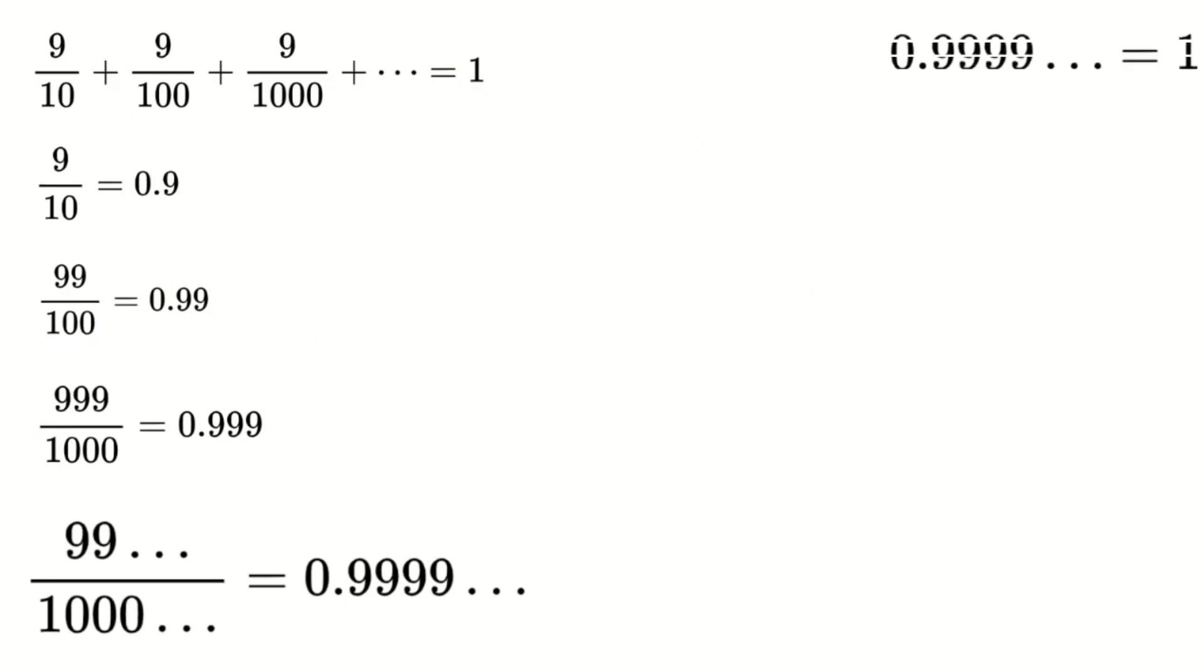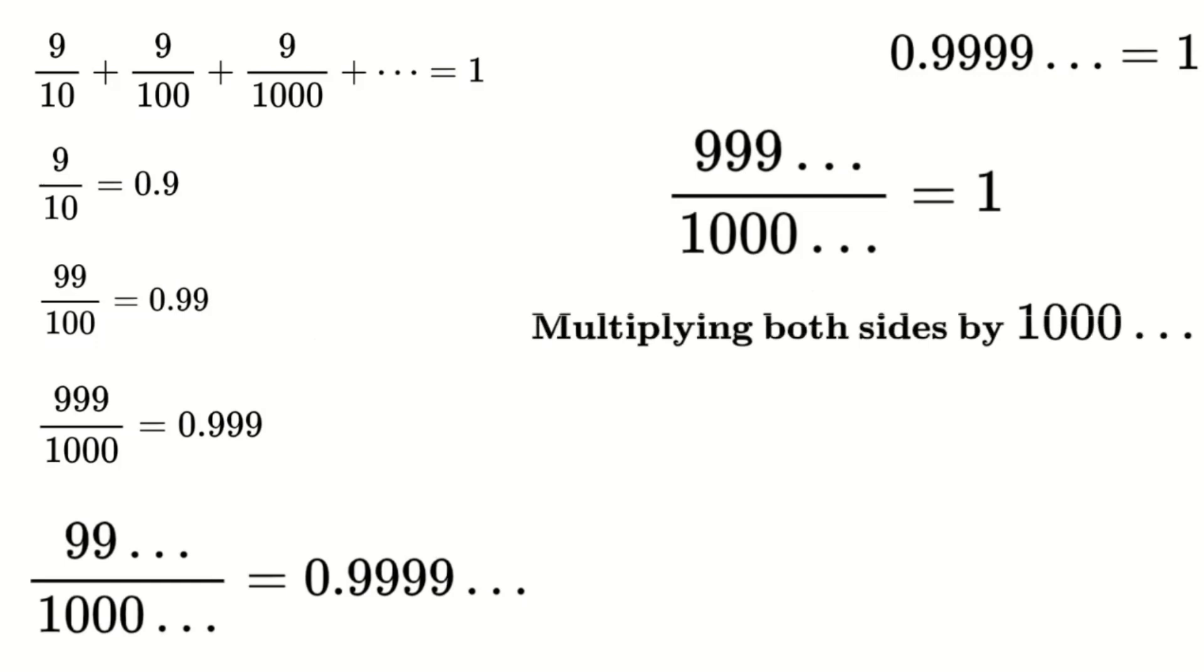Now, if we assume that 0.99 dot dot up to infinity equals 1, then we must have 999 to infinity over 1,000 to infinity equals 1. Multiplying both sides by the denominator, we get 999 to infinity equals 1,000 to infinity, which implies that 999 to infinity is exactly 1,000 to infinity.